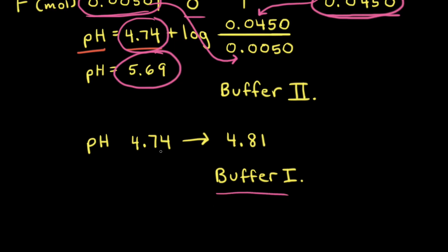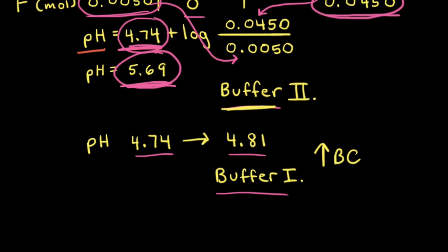Buffer solution 1 started at pH 4.74 and rose to 4.81 upon the addition of the base. Buffer solution 2 started at 4.74 and the pH rose to 5.69. Therefore buffer solution 1 had a higher capacity to neutralize the added base, so buffer solution 1 has the higher buffer capacity. Buffer 2 has a decreased capacity to neutralize the base compared to buffer 1. The only difference between these two buffers was that buffer 1 had a higher concentration of acetic acid and the acetate anion. Therefore, the higher the concentration of the weak acid and the conjugate base, the higher the buffer capacity.